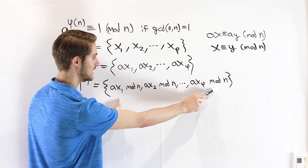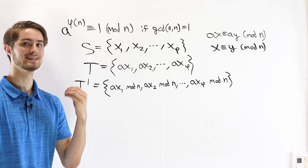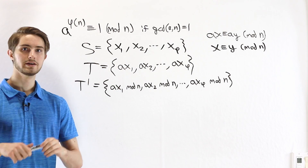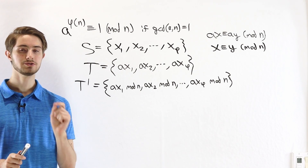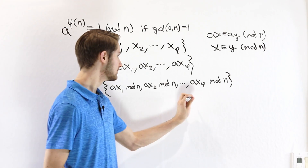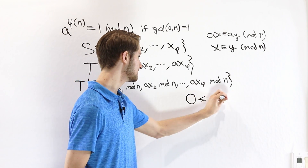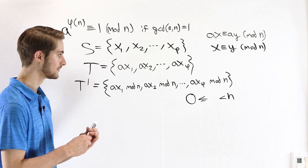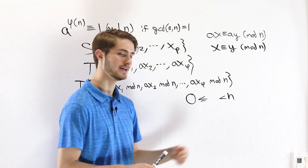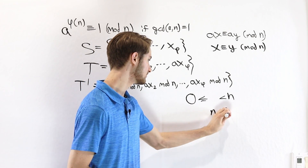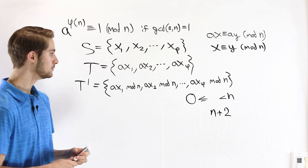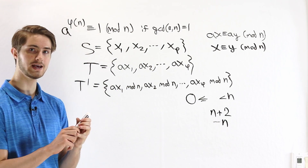When we reduce the elements of T mod n, they're still going to be different, so these are all distinct numbers. When we reduce a number mod n, the result will always be between 0 and n, not including n. The reason is that if the result is bigger than n — say n+2 — when reducing mod n we could subtract another multiple of n and get a smaller integer that's still congruent mod n.